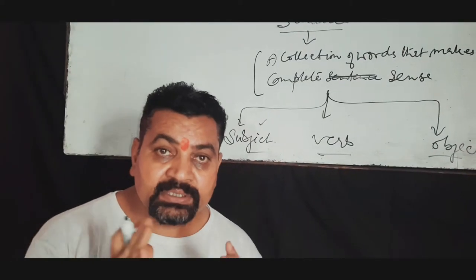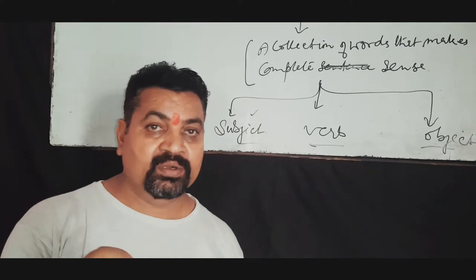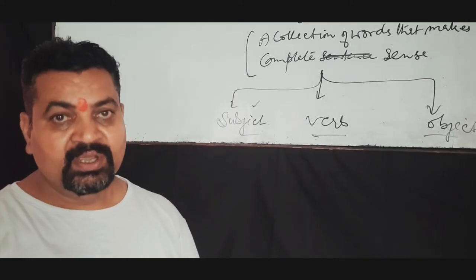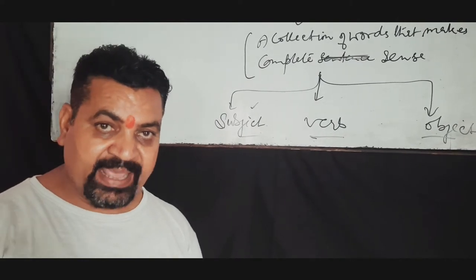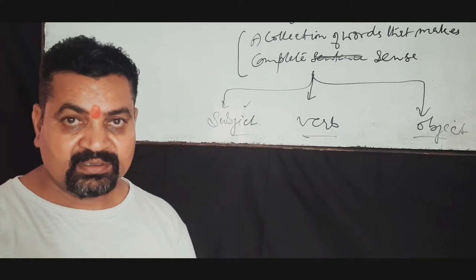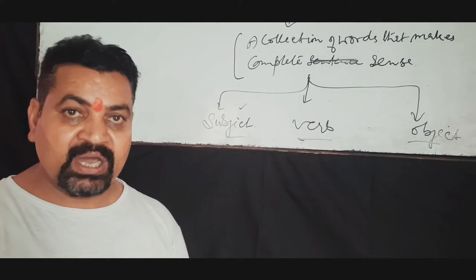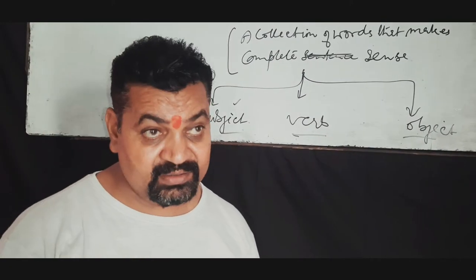Subject may be defined as a noun or pronoun that performs action in a sentence. Verb is an action. Object is a noun upon which the action is done.